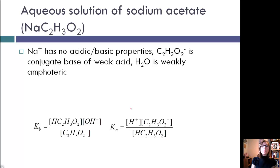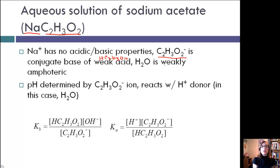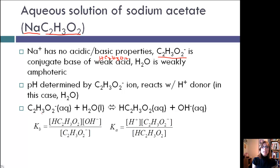We have an aqueous solution of sodium acetate — Na-plus and C2H3O2-minus. Na-plus has no acidic or basic properties, so it won't affect the concentration at all. Whereas C2H3O2-minus is the conjugate base of the weak acid acetic acid, HC2H3O2. This anion is a strong conjugate base. H2O is weakly amphoteric, so the pH is determined by the strong conjugate base, the C2H3O2-minus ion, which reacts with water as the H-plus donor. The reaction produces acetic acid and OH-minus, causing the solution to be basic.